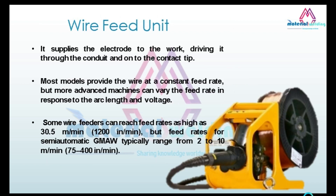The wire feeder unit of GMAW supplies the electrode to the work, driving it through the conduit and onto the contact tip. Most models provide wire at a constant feed rate, but more advanced machines can vary the feed rate in response to arc length and voltage. Some wire feeders can reach feed rates as high as 30.5 meters per minute (1200 inches per minute), while feed rates for semi-automatic GMAW typically range from 2 to 10 meters per minute (75 to 400 inches per minute).